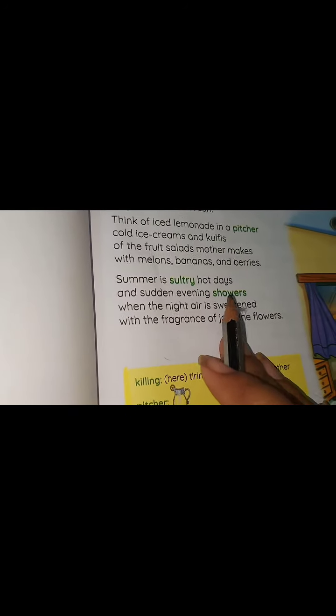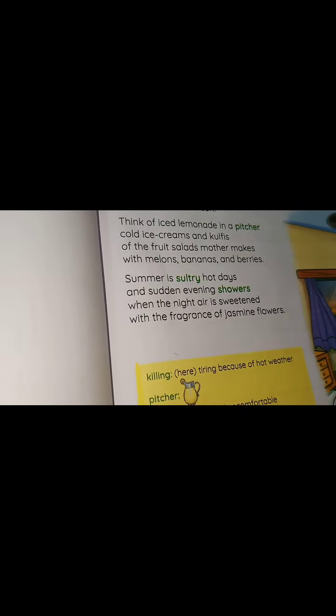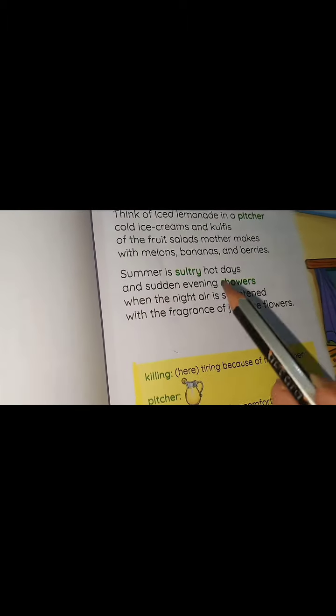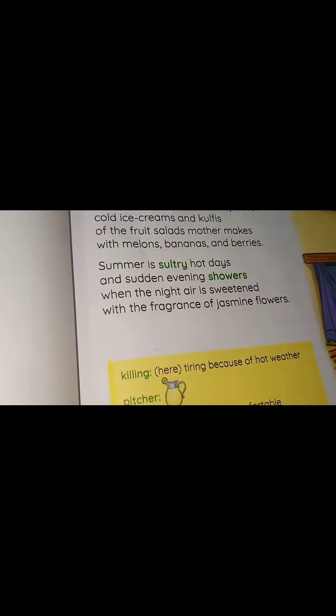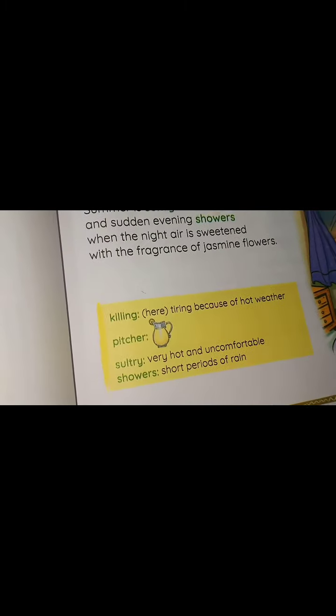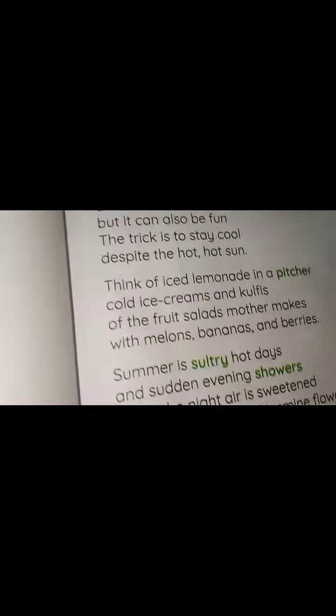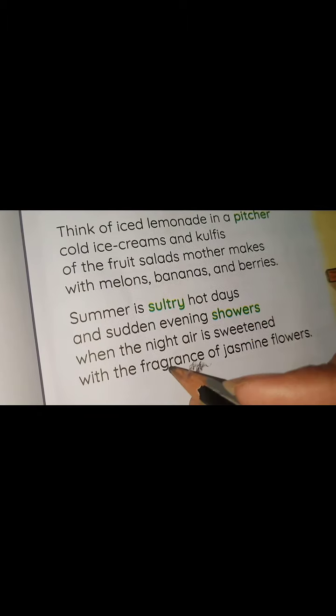What is summer? Summer is sultry, meaning very hot and uncomfortable. During the daytime, summers are very hot and uncomfortable. But when it is evening, there is a short period of rain. And during the night, due to this rain, the air is sweetened with the fragrance of jasmine flowers.